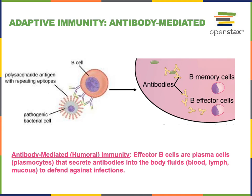B lymphocytes are responsible for the antibody-mediated branch of adaptive immunity, which is also known as humoral immunity. The term humoral or antibody-mediated refers to the fact that the effector B cells known as plasma cells or plasmocytes secrete antibodies into body fluids. The humors are the fluids of the body — the blood, the lymph, and the mucus — and the plasmocytes secrete antibodies that can circulate in the blood or lymph, or be secreted onto a mucus membrane.